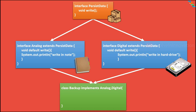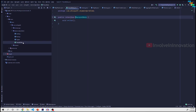When we try to implement both Analog and Digital, the compiler doesn't know which write method to use, because we have two different concrete default method implementations — one in each interface. To avoid this in Java 8 or above, if the interfaces you are multiply inheriting have the same method, you must mandatorily override that method in your concrete class.